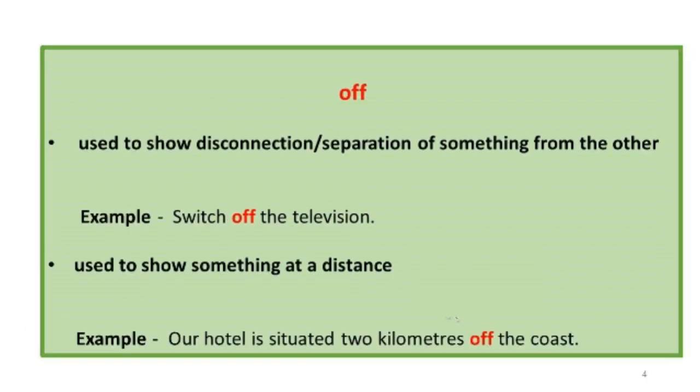The next preposition is 'off', O-F-F. It is used to show disconnection or separation of something from the other. For example, switch off the television. In this sentence, 'off' shows disconnection. The preposition 'off' is also used to show something at a distance. For example, our hotel is situated two kilometers off the coast, which means that the hotel is situated at a distance of two kilometers from the coast.